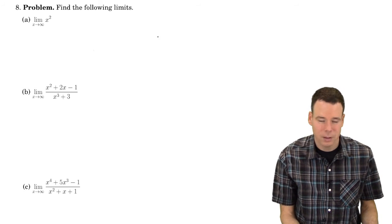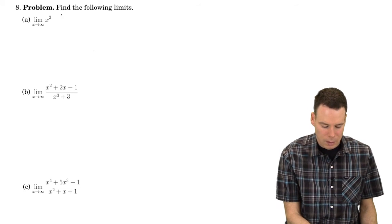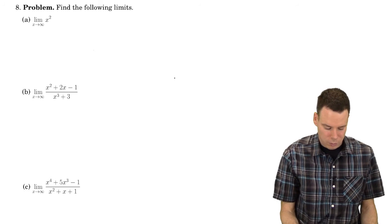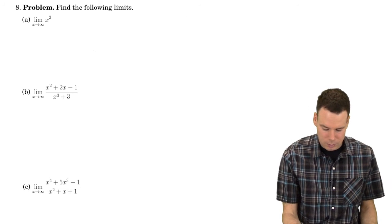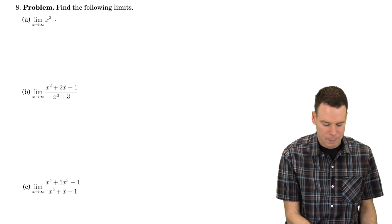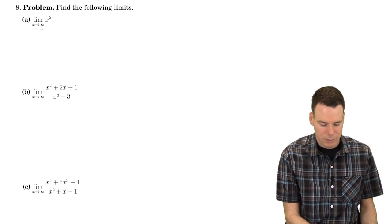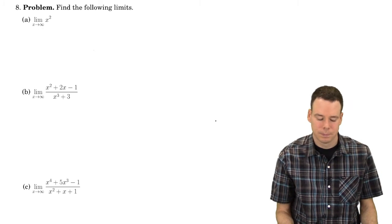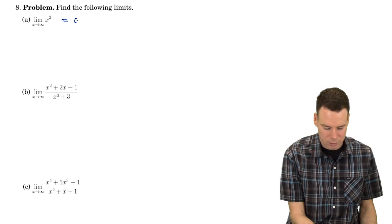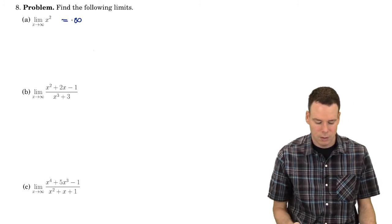All right, let's have a final look at a few examples. These examples will actually be quicker than the previous ones, but let's go through them. What's the limit as x goes to infinity of x squared? As x gets really big, x squared is also getting really big, so that's infinity.